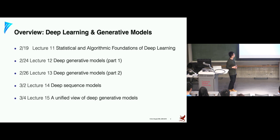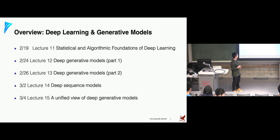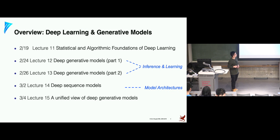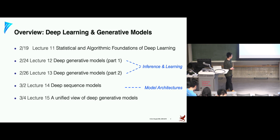In the past three classes, we have been talking about the foundations of deep learning in the perspective of probabilistic graphical models. We had two lectures about deep generative models, focusing on the inference and the learning algorithms. Today we'll be talking essentially about the model architectures — how these deep generative models are composed with basic deep learning building blocks. In the next lecture, we'll give a unified view of these deep generative models.